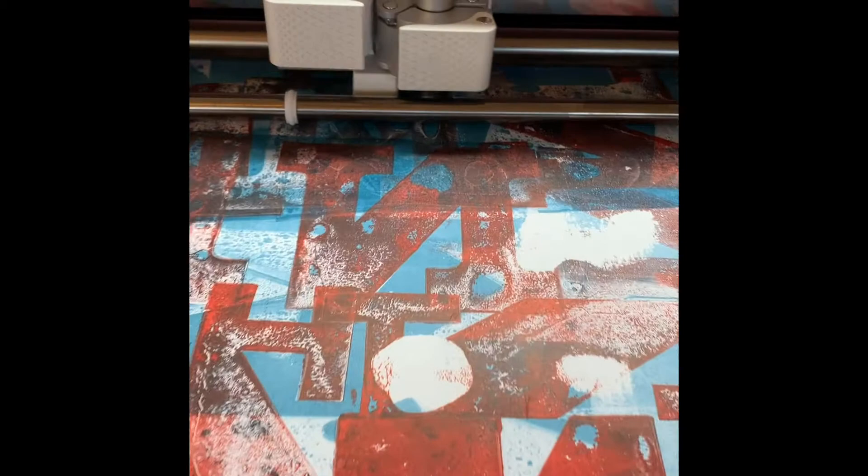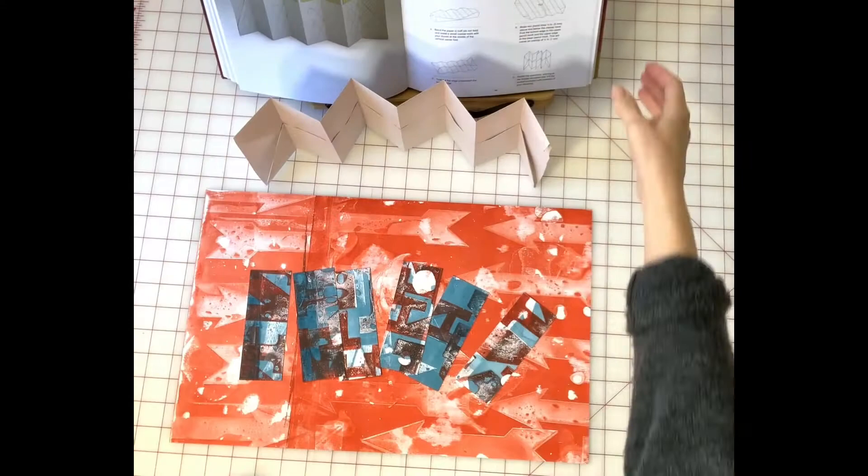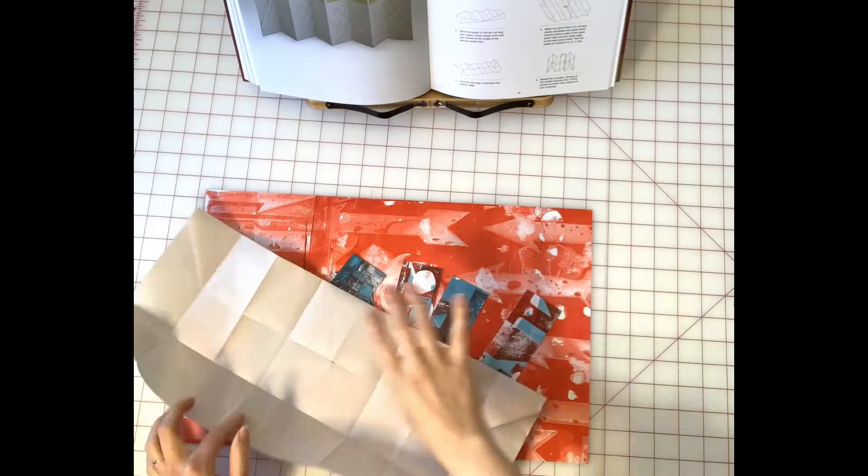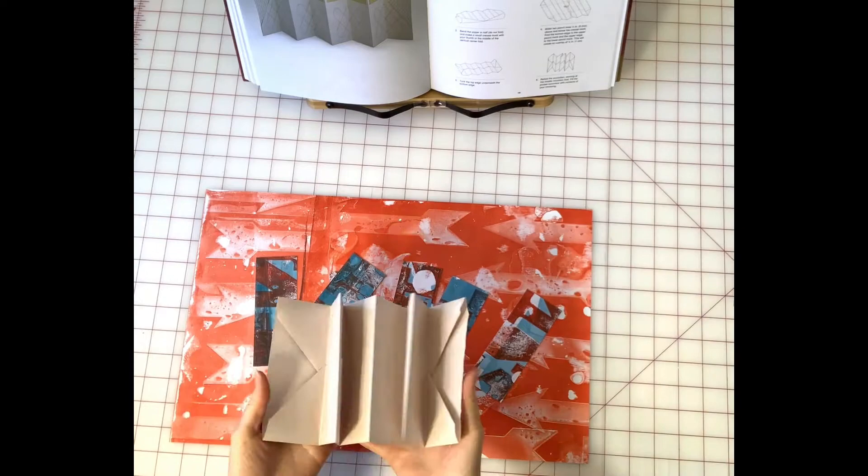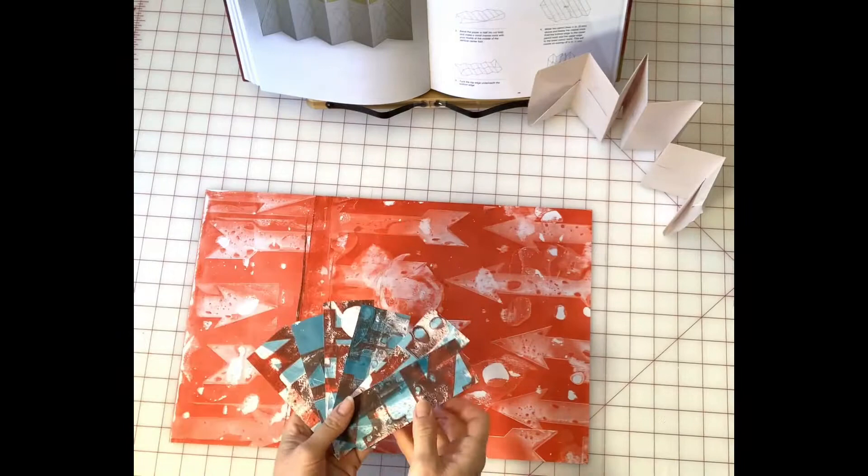I started my pocket accordion by letterpress printing and then cutting out the inserts using my Cricut Maker. Then I grabbed my instructions from the art of the fold and I started creating the folds on a piece of newsprint which is called the dummy book that helps you figure out what you're doing.